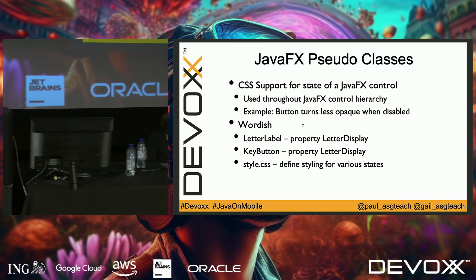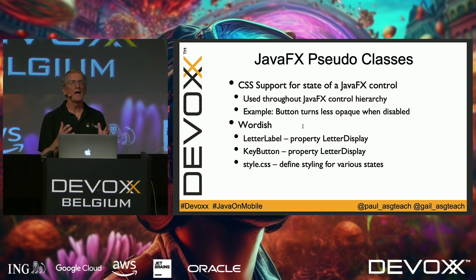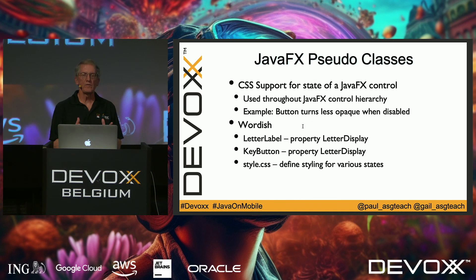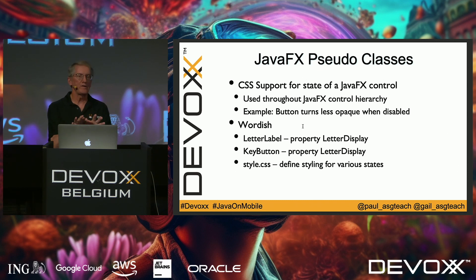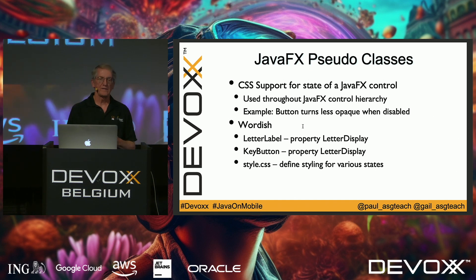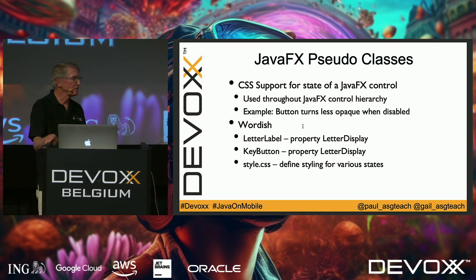The next JavaFX technique is pseudo-classes — a more advanced feature used throughout JavaFX. You can use a pseudo-class to specify CSS styling of a control based on the state of that control. In Wordish, the states of the keys are always changing, so we use pseudo-classes to control CSS styling for each state. For example, if you want a button to be less opaque when disabled, a pseudo-class handles that. The 'letter display' property in LetterLabel and KeyButton classes uses pseudo-classes, which affect CSS styling, defined in a separate style.css file.